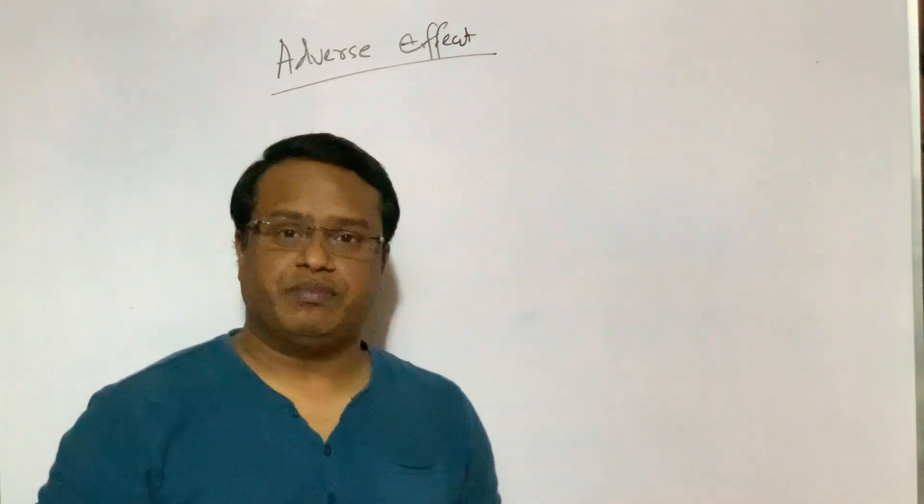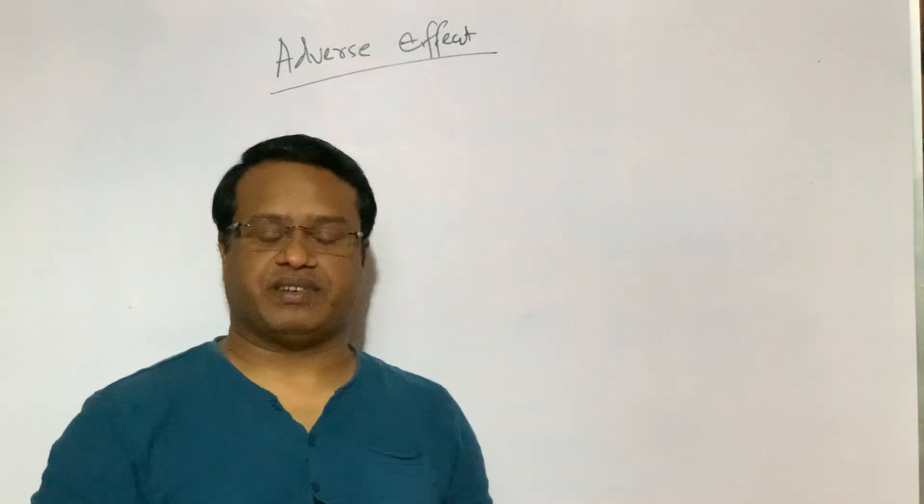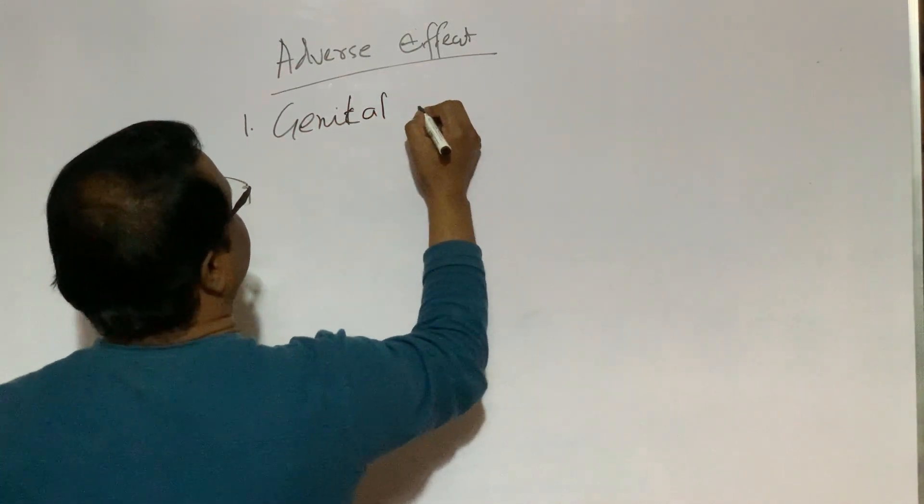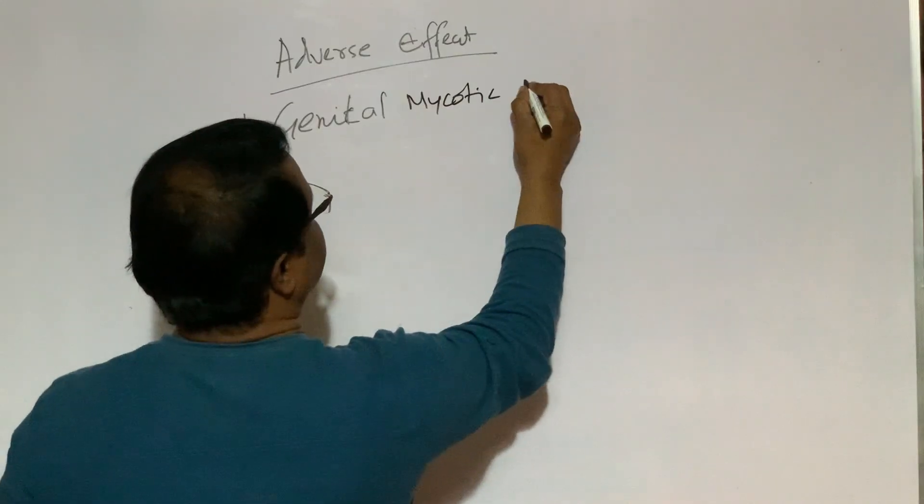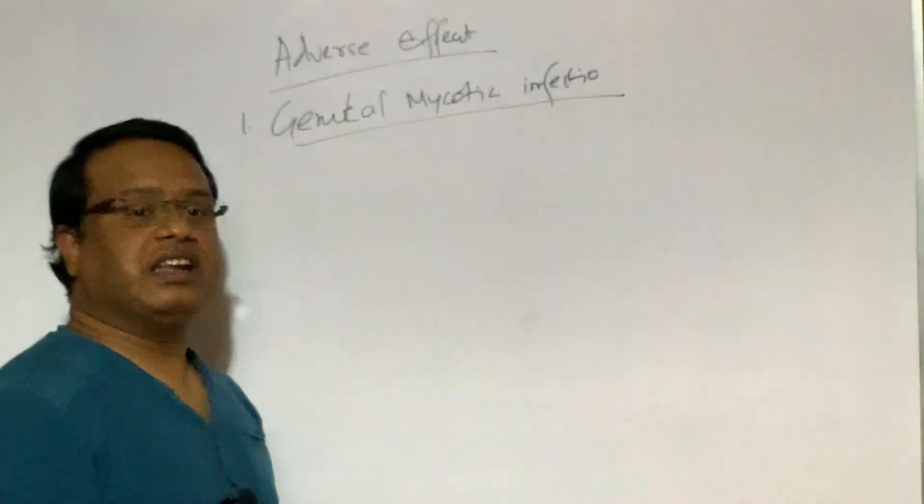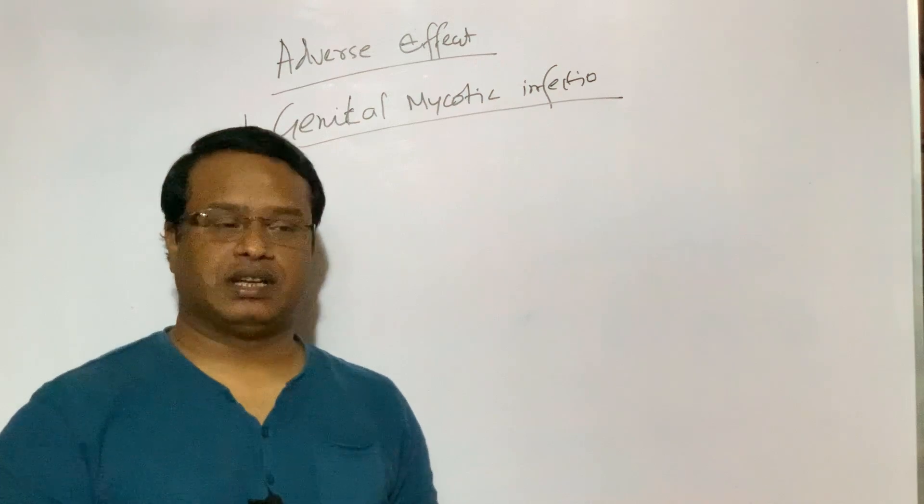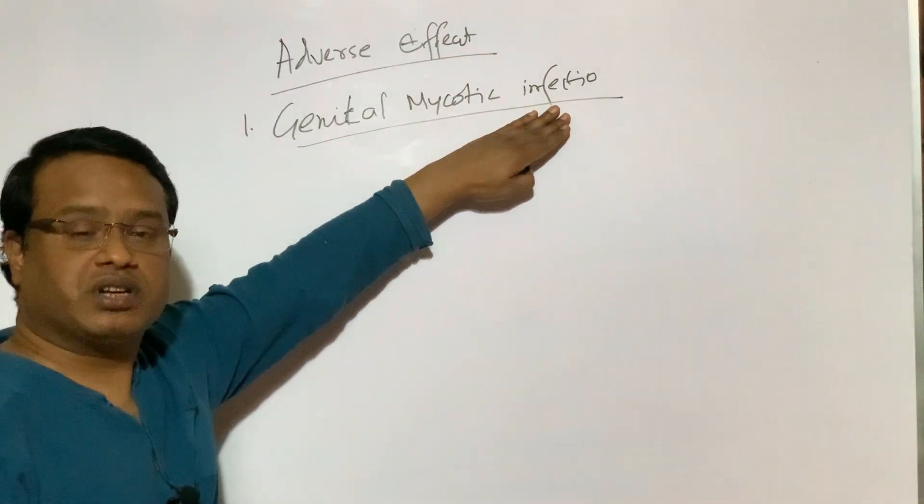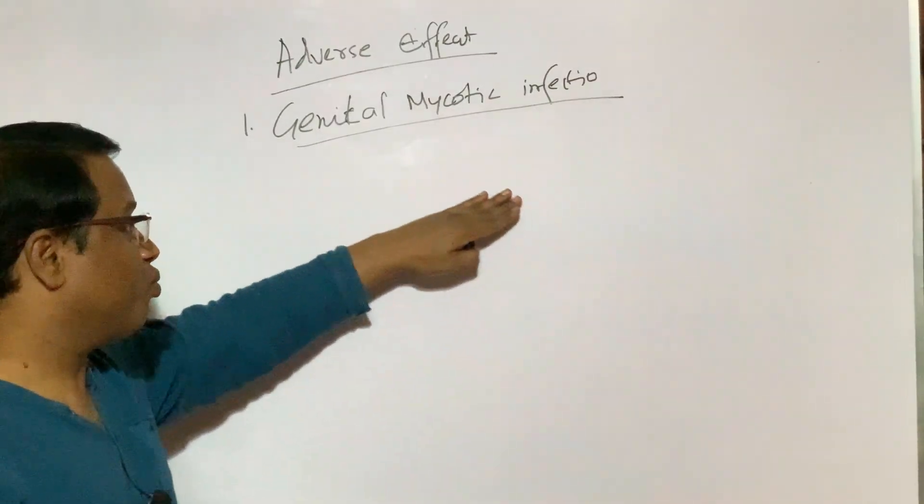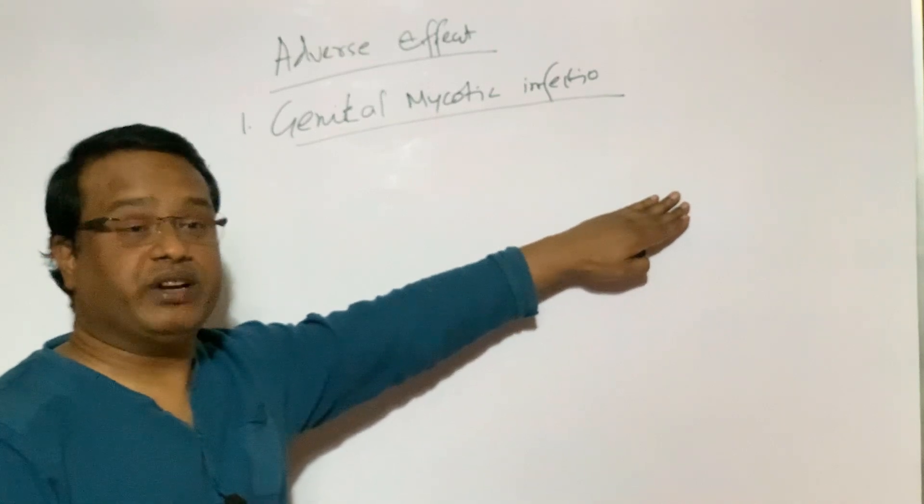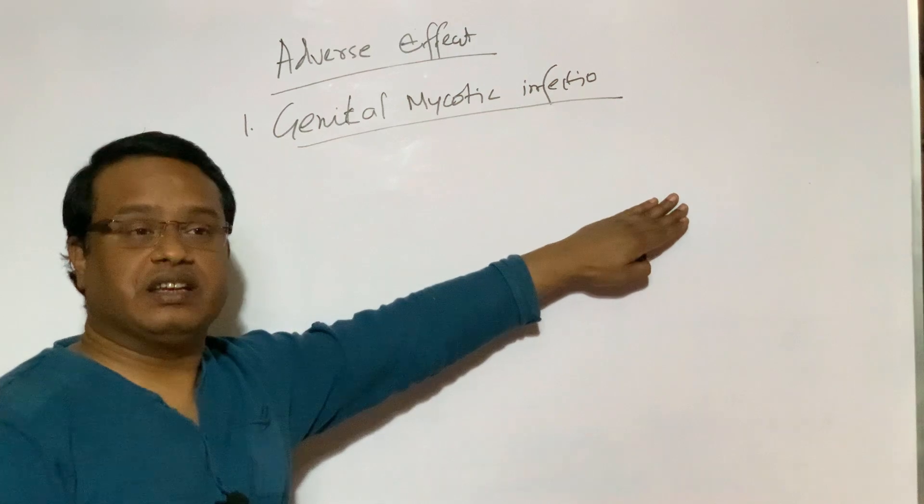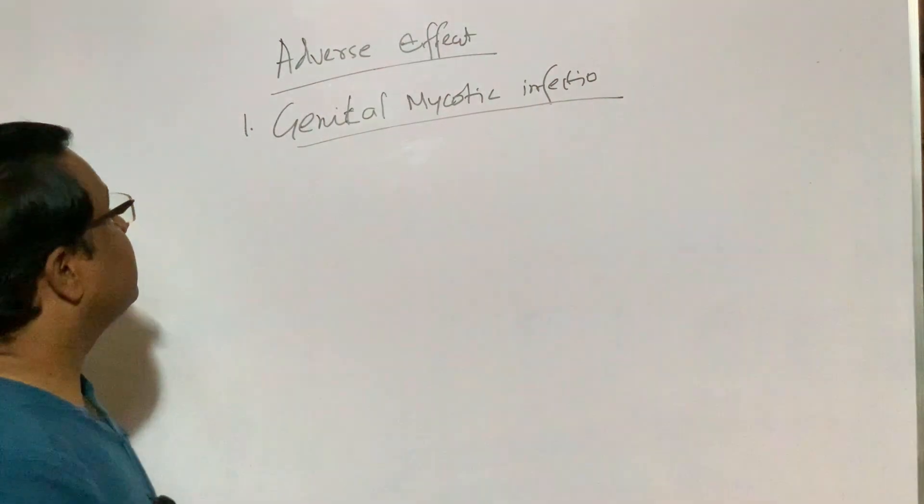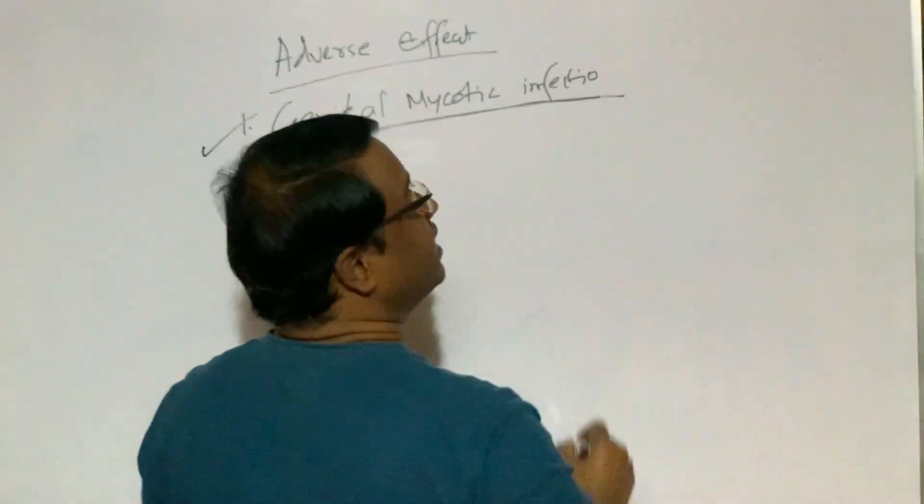Adverse effect. Now, I am going to describe some untoward effect or adverse effect. Number one, genital mycotic infection. That means, fungal infection of genital organ is very common. Because there is plenty of sugar in urine, SGLT2 inhibitor inhibits reabsorption of sugar in the proximal convoluted tube. By this way, sugar is drained out through urine. And when we pee every time, our perineal region is irrigated with sugars and other chemicals, sodium, important food for bacteria and fungus. That's why genital mycotic infection is a very common adverse effect.